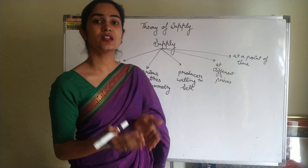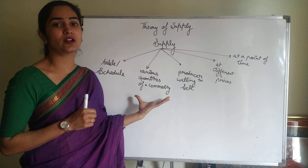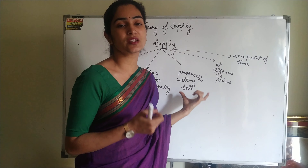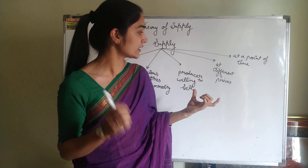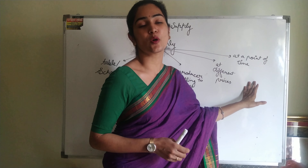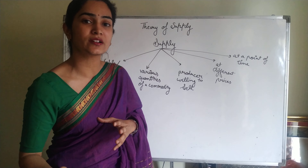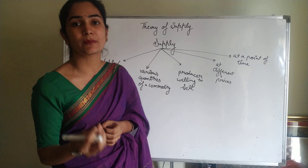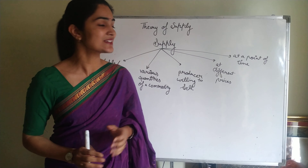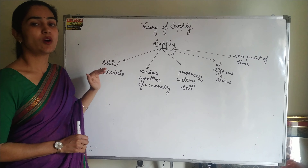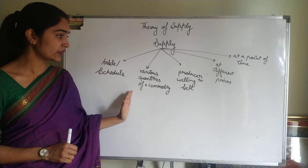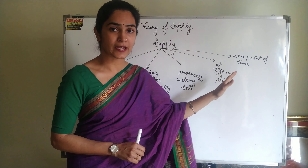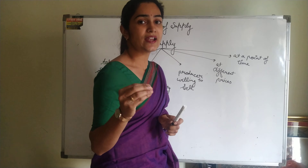Moving towards the formal definition of supply — it is a table or schedule, a tabular presentation showing various quantities of a commodity which the producer is willing to sell in the market at different prices and at a point of time. This is the definition of supply.